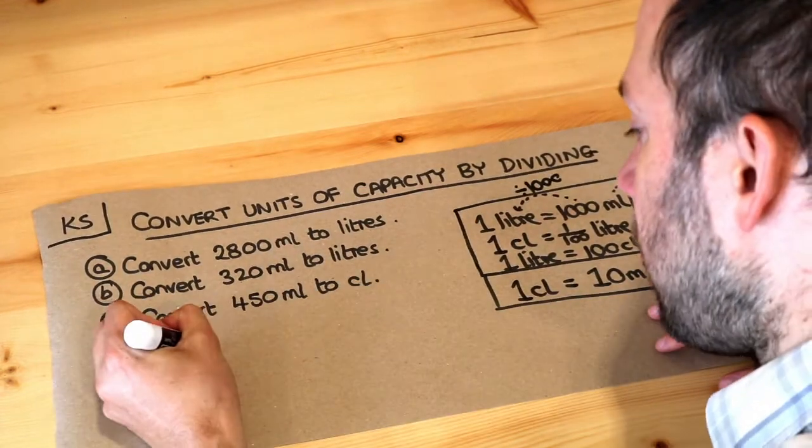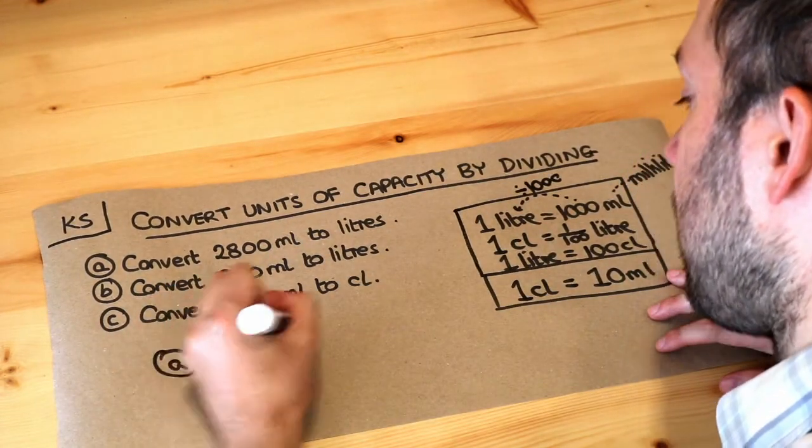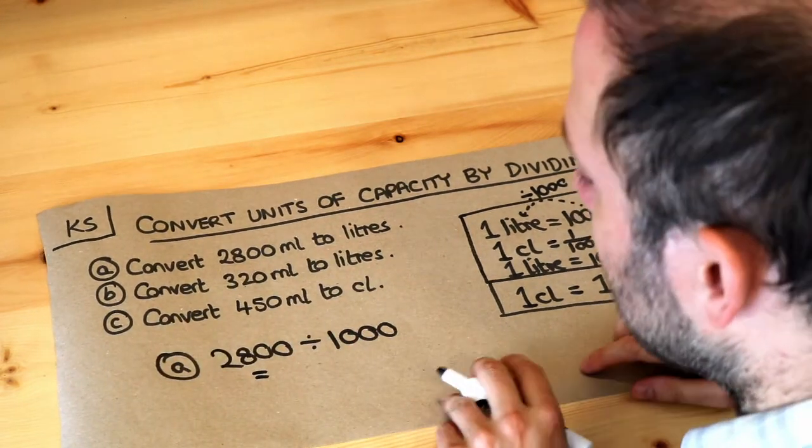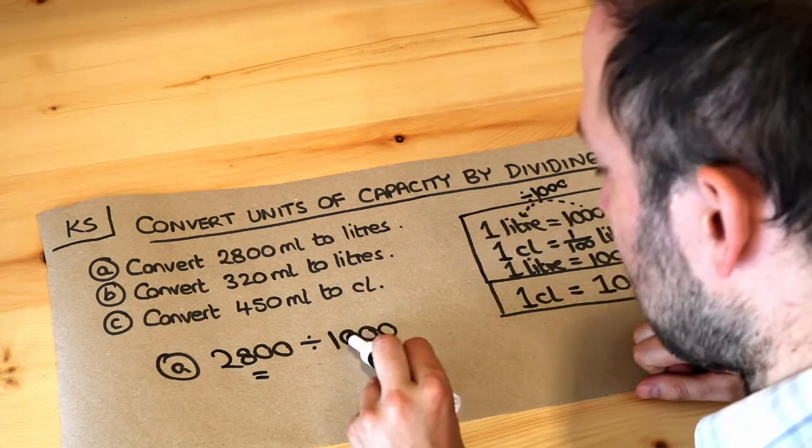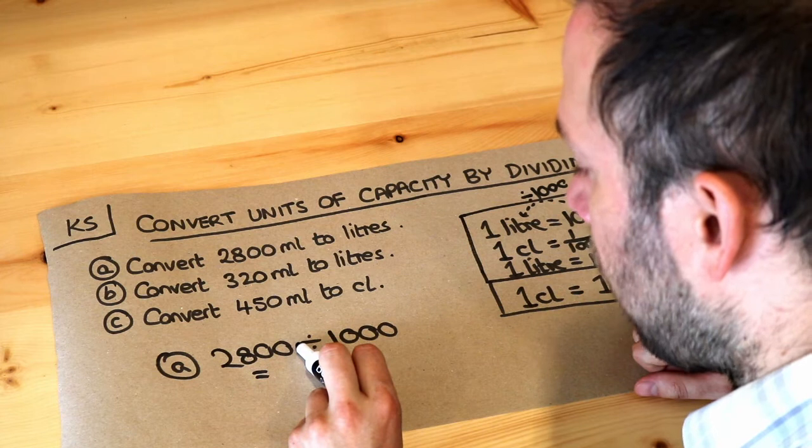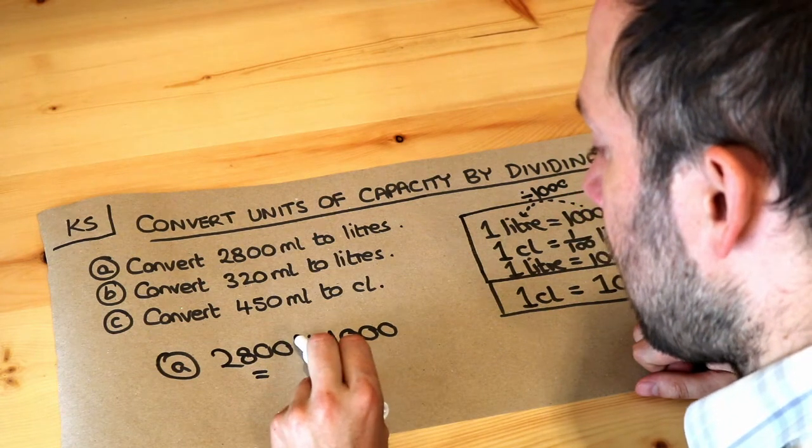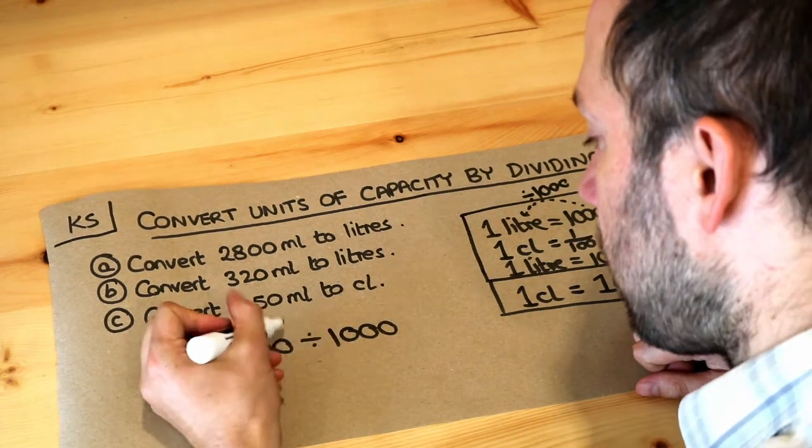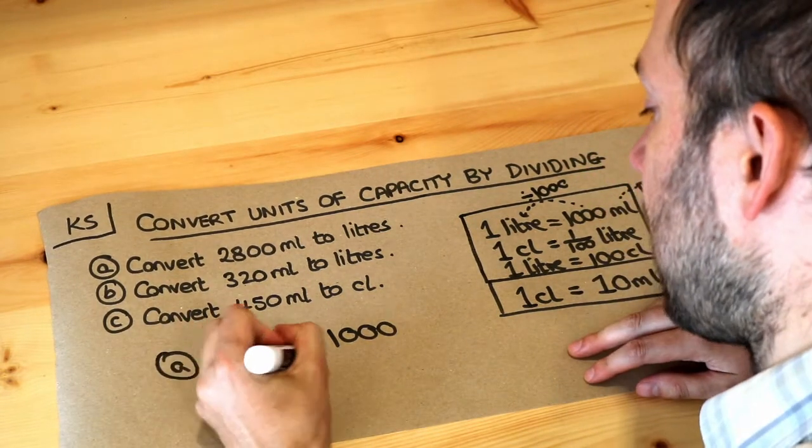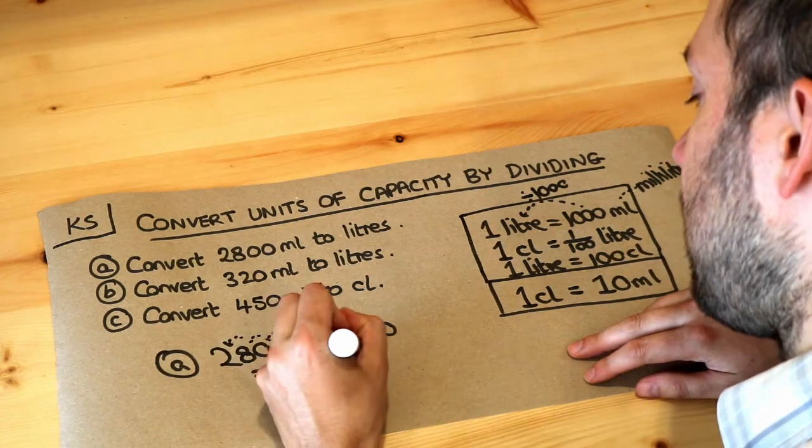So all we need to do is 2,800 divided by a thousand. And remember when you divide by a thousand, that's going to move the decimal place three times because there's three zeros there. So the decimal place starts at the end of the number after the units digit, which is here, and we move one, two, three, and the decimal point will now be here, which is 2.8. So it's 2.8 litres.